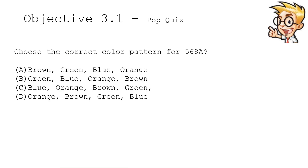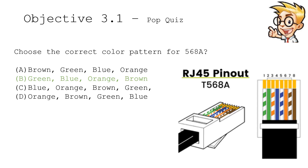We're at the end of this objective. Choose the correct color pattern for 568A. Is it brown, green, blue, orange? Is it green, blue, orange, brown? Is it blue, orange, brown, green? Or is it orange, brown, green, blue? If we look at a pinout for A, we can see that it is green, then blue, then orange, then brown. So the answer is: green, blue, orange, brown.